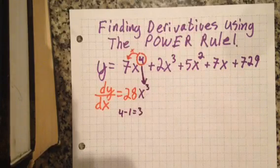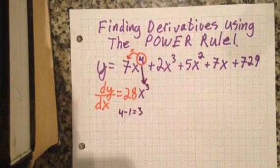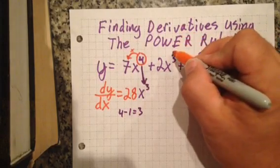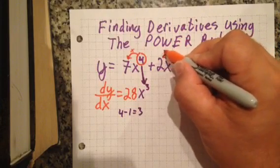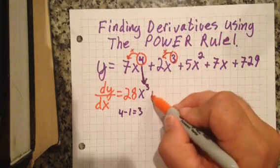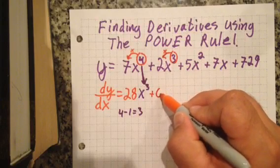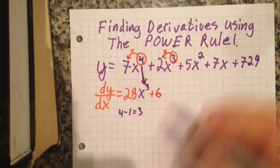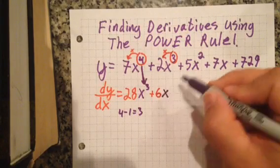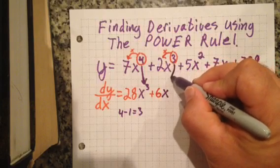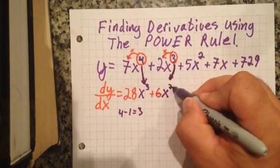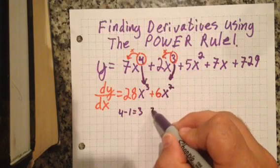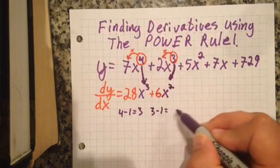Let's keep going. Take that power of 3 and you multiply it by the leading coefficient 2, and that's going to give you 6x to what power? Again, 3 gets broken down by the power rule to 2 because you subtract 1, and 3 minus 1 will give you 2. So 6x squared.